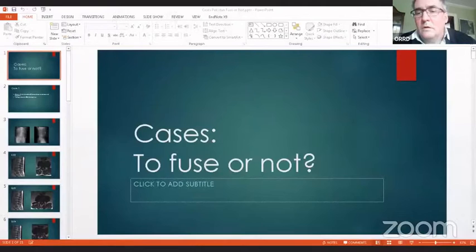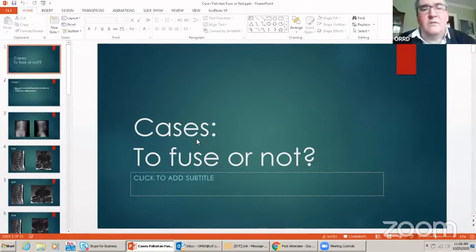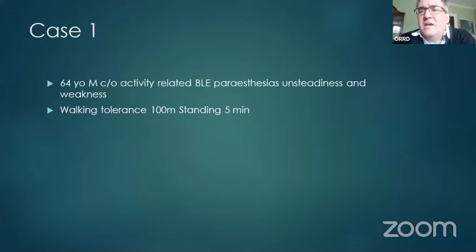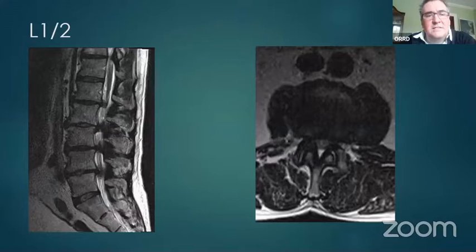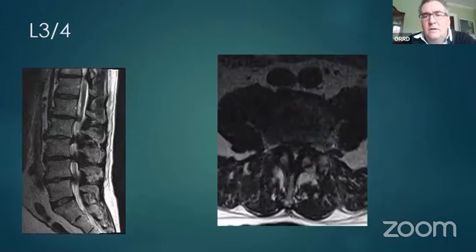Doug shared his first case: a 64-year-old male complaining of activity-related bilateral lower extremity paresthesias, unsteadiness, and weakness. He says it doesn't really hurt — he just can't walk very far because his legs get wobbly. Walking tolerance is less than 100 meters, standing tolerance is five minutes. Upright X-rays and MRI were shown, with axial T2 images at L1-2, L2-3, L3-4, and L4-5 levels showing stenosis across four levels. Thoracic spine MRI was fine.